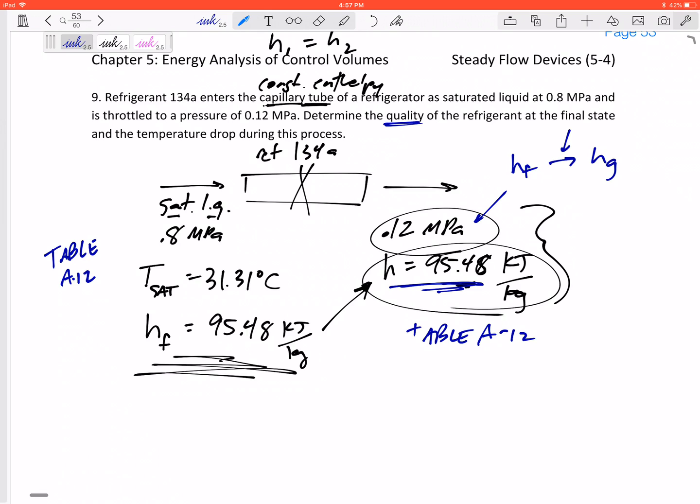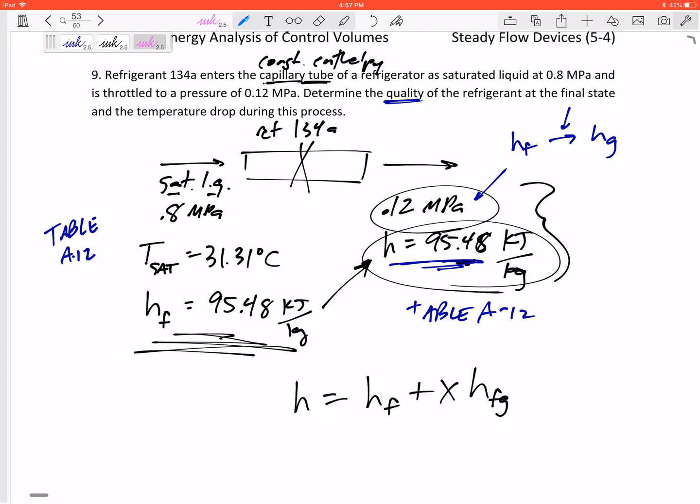Alright, so let's find the quality. I know that h—in order to find quality—h is h_f plus x times h_fg.